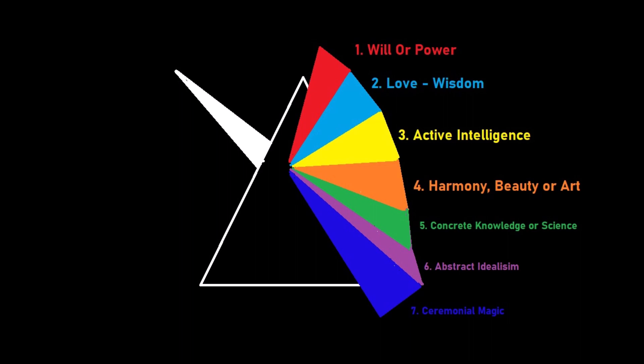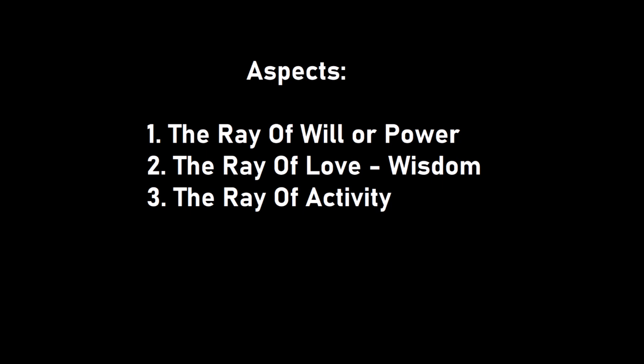The way that it works is that these are seven forces in the cosmos through which everything in physical material reality is created. According to Bailey, the first three rays are aspects associated with the classic three essentials: body, soul, and spirit. Through these three aspects all things are created. Those three rays are the ray of will or power, the ray of love-wisdom, and the ray of activity or adaptability, sometimes also known as active intelligence.